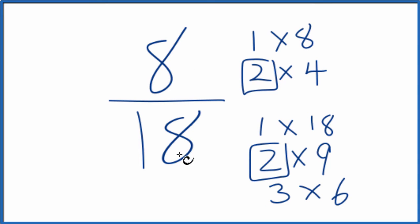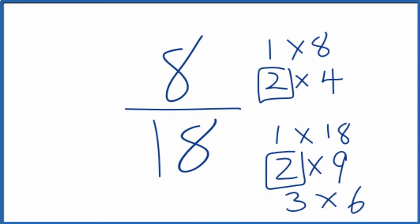So we can divide 8 by 2 and 18 by 2, and we'll have simplified 8 over 18. Let's move these over here.